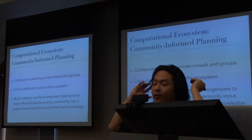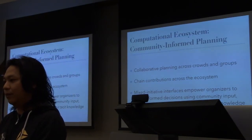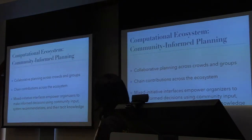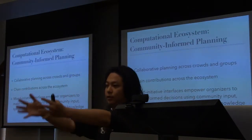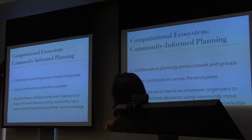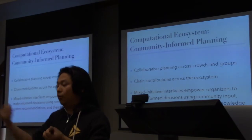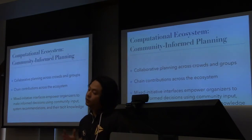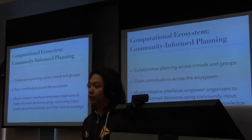To recap, we have a computational ecosystem for community planning — thinking about designing systems, going across and also vertically in slices. We have a way to do collaborative planning that spans crowds and groups. We have a way to chain contributions across the ecosystem where someone provides data through interaction, that data enhances another interaction, and so on. And we have these mixed-initiative interfaces that empower organizers to make informed decisions by bringing together all community input, what the system can do, and the tacit knowledge of the organizers as well.